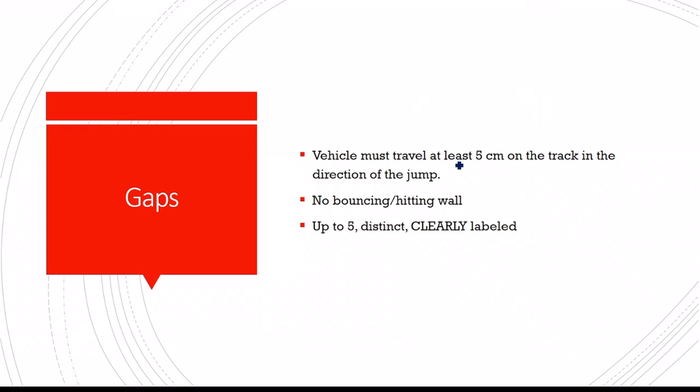And so gaps. Again, it must be at least five centimeters in the direction of the jump. So basically, again, this has to be five centimeters. And of course, the jump must be going that way. So you can't bounce or hit a wall or anything. So you basically can't go pew, and then it goes back up. Yeah, you can't do that now.